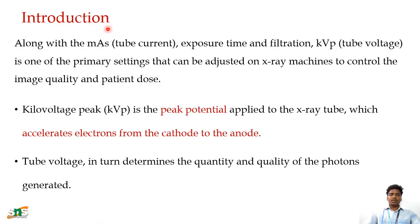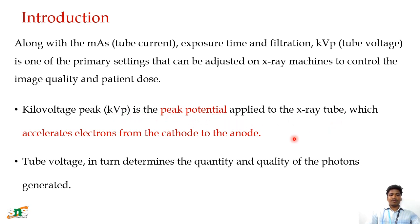Moving on to the introduction: along with the primary settings like tube current (mA), milliampere-seconds (mAs), exposure time, and filtration, tube voltage (KVP) is one of the primary settings that can be adjusted on X-ray machines to control image quality and exposure factors. Kilovoltage peak (KVP) is the peak potential applied to the X-ray tube, which accelerates electrons from the cathode to the anode. In summary, mA determines the quantity and KVP determines the quality of the photons generated.